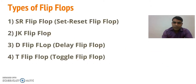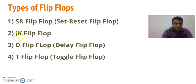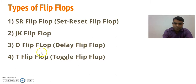There are four different types of flip-flops. One is the SR flip-flop, also called the set-reset flip-flop. Second is the JK flip-flop. Third is the D flip-flop, also known as the delay flip-flop. And the fourth is the T flip-flop, also called the toggle flip-flop.